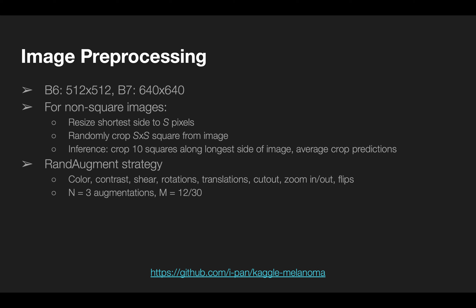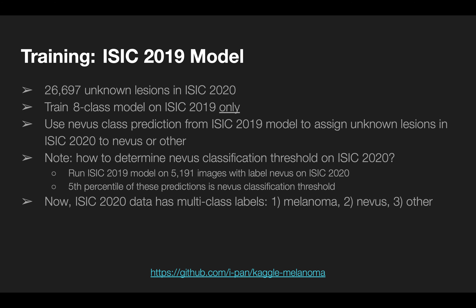I used RandAugment for data augmentation, which randomly samples augmentations from a specified list to be applied to each image. I first trained a model on ISIC 2019 data to classify images into different skin lesions, then used this model to reclassify all the unknown non-melanoma lesions in the 2020 data as nevus or other, so I could train on three total classes.